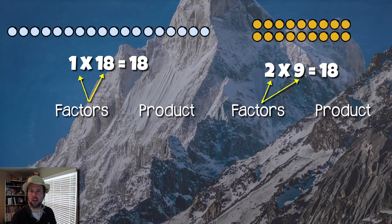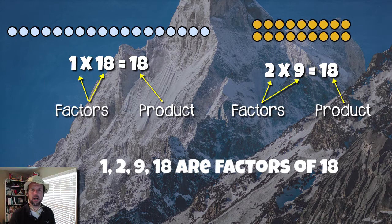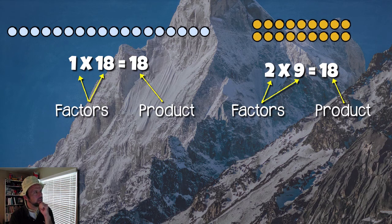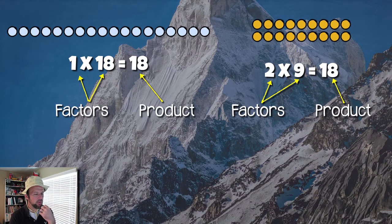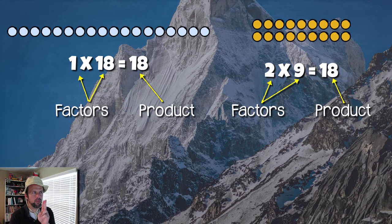So if I write those factors in order: 1, 2, 9, and 18 are factors of 18. But I feel like we're missing something. Why don't you guys take a second and explore a little more — see if you can find another pair of factors, another pair of two numbers that would have a product of 18. What two other factors can we put together to get the product of 18?